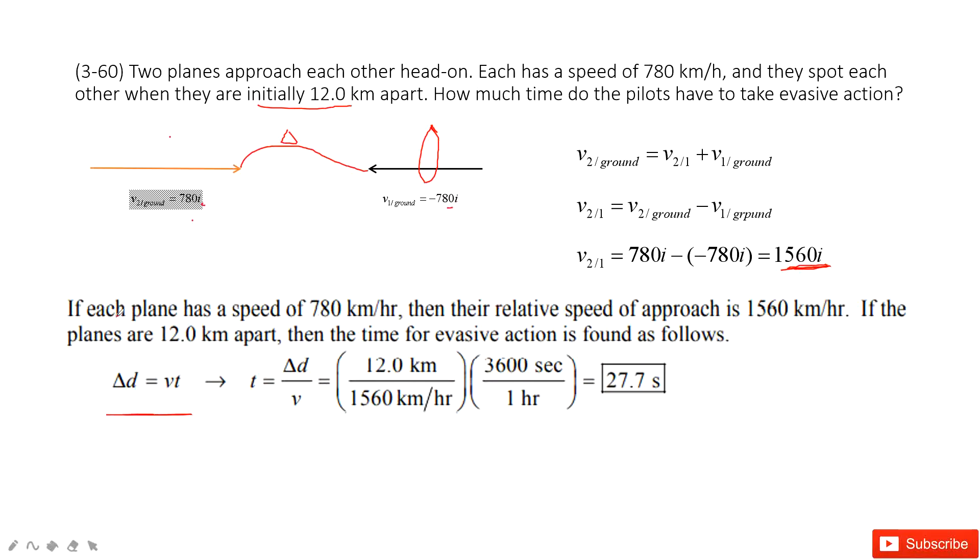If each airplane has a speed of 780 km per hour, then we can very easily find their relative speed. This is how we find relative velocity speed using our typical velocity relationship: velocity 2 to the ground equals velocity 2 to 1 plus velocity 1 to the ground. Thank you.